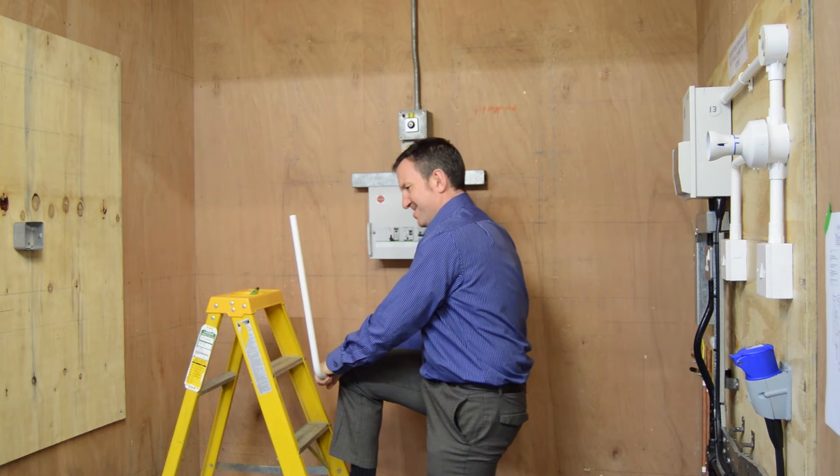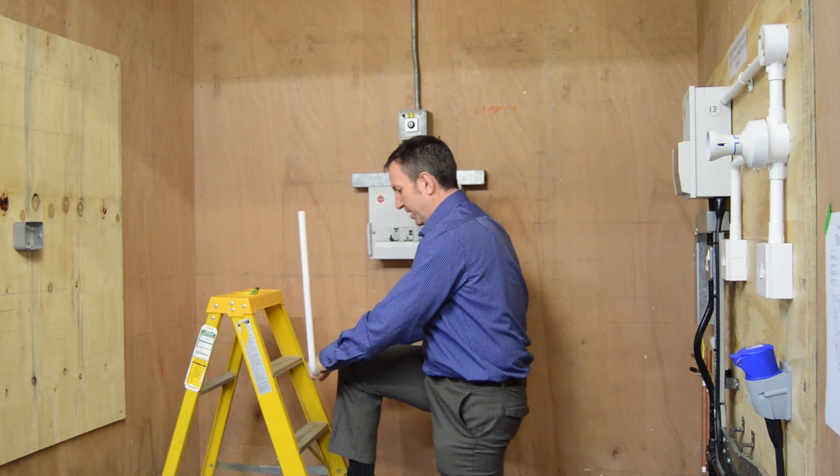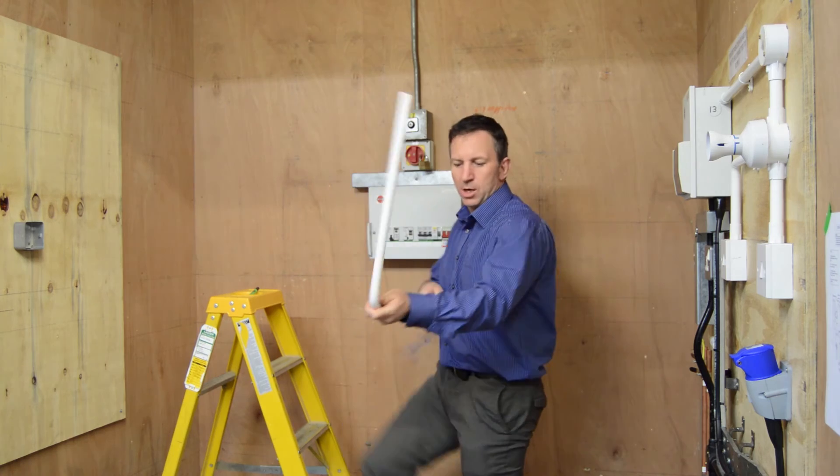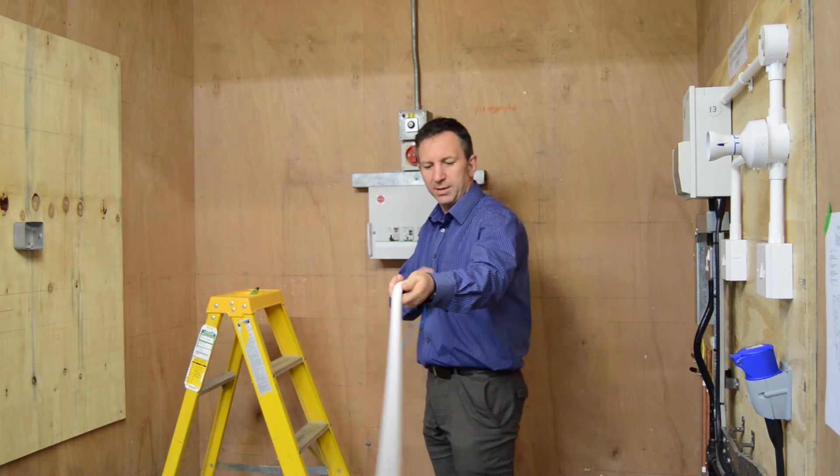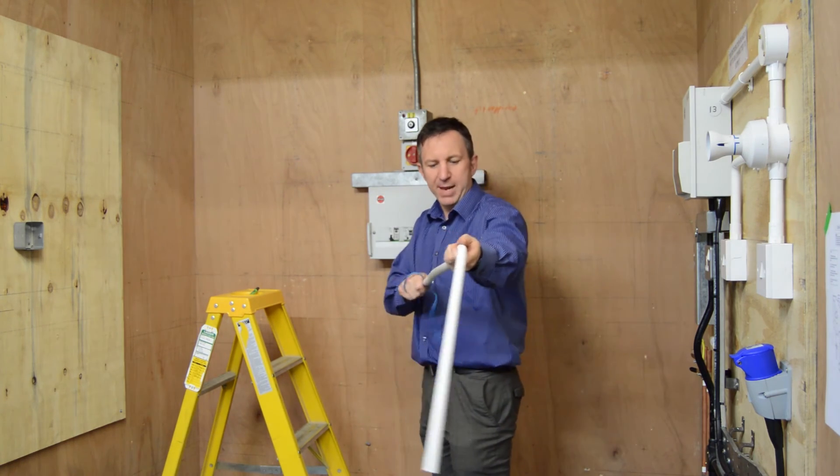Again, making sure we keep that straight up. Once we've done that, we can then remove our bending spring.